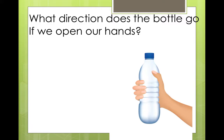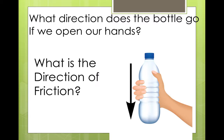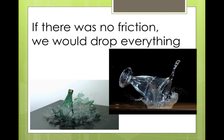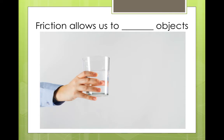What direction does the bottle go if we open our hands? Up or down? Down, of course. So, what is the direction of friction? It is the opposite of movement. It's up. Friction is holding it up. If there was no friction, we would drop everything. We need friction to hold. Friction allows us to hold objects.